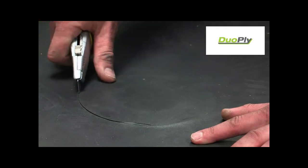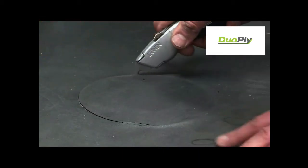Install the membrane over the anti-backup drain and when ready, remove the membrane from the top of the drain.